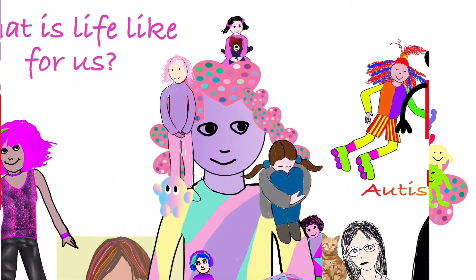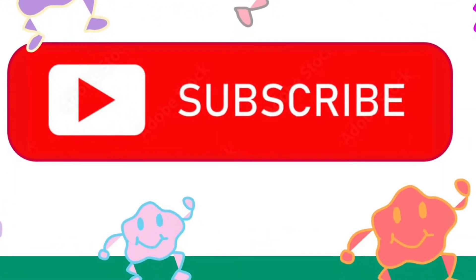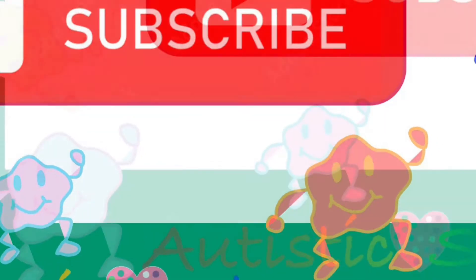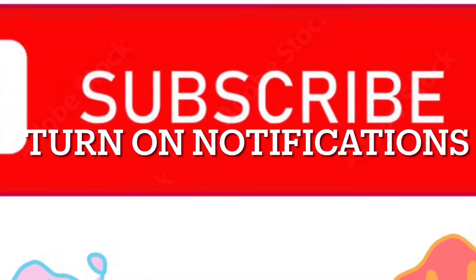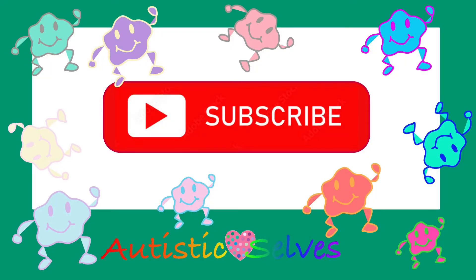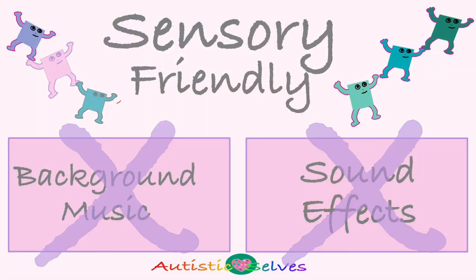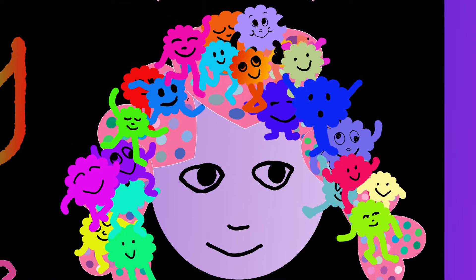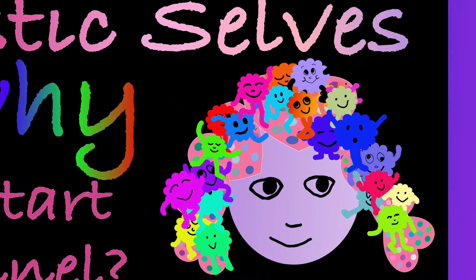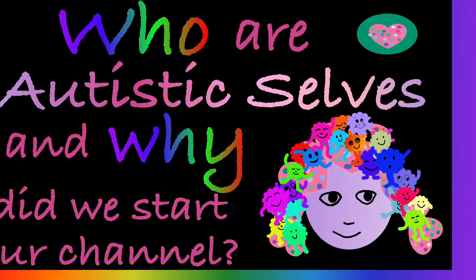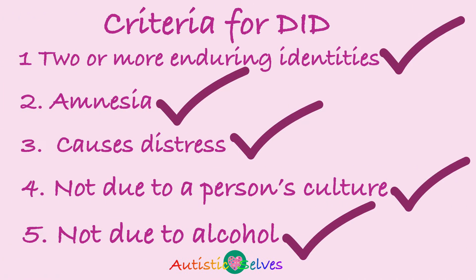We're trying to grow our channel so we'd really like it if you could subscribe by clicking the button below. If you turn on notifications then you will get to know when we publish new videos. There are two versions of our video — this is the sensory friendly version. We also have a version which contains music and sound effects. Some of the content in this video has been taken from our longer video called 'Who are Autistic Salves and why did we start our channel?' We feel it is helpful to have a standalone video on the criteria used to diagnose DID.